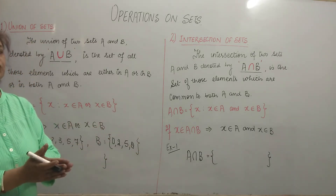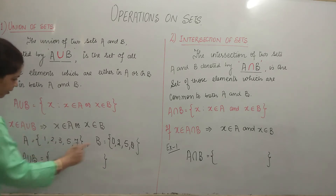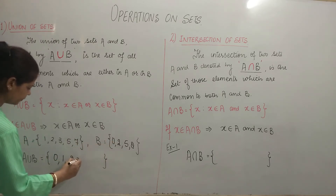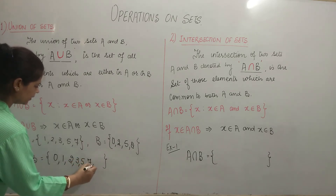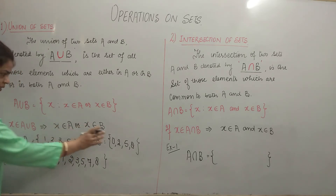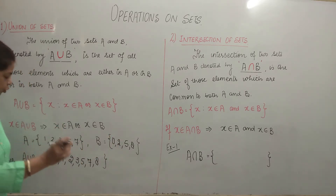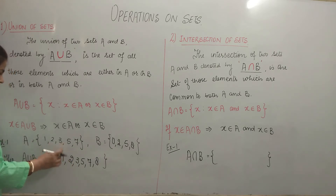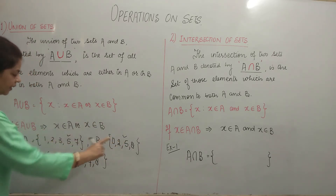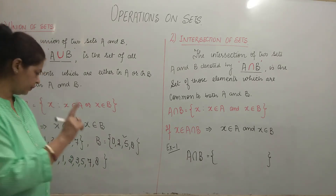When we combine these two sets, that means we are taking union of these two sets, A union B. Then A union B will have 0, 1, 2, 3, 5, 7 and 8. Observe carefully that we are taking elements of both sets, but since 2 was common, we are not writing 2 twice. In the same way, 5 is an element that both set A and set B have, but we are not writing 5 twice, because repetition of elements is not there in a set.